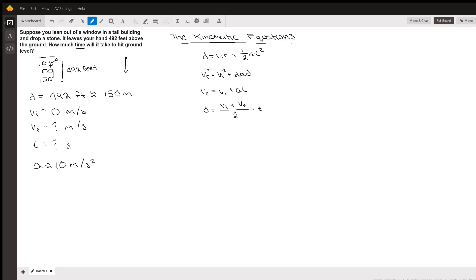The third thing I did was I listed the values in the kinematic equations—all the different variables—that way we can see which kinematic equation we have enough information to use and then solve for the variable that we're looking for. In this case, we know that the distance the stone is going to travel is 492 feet, which is about 150 meters.